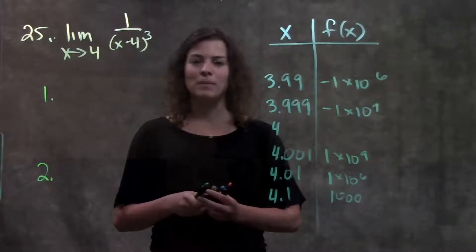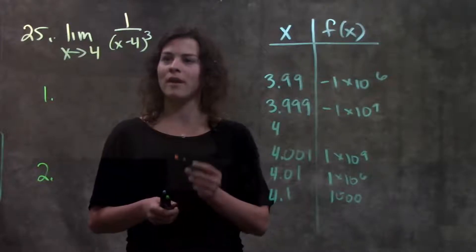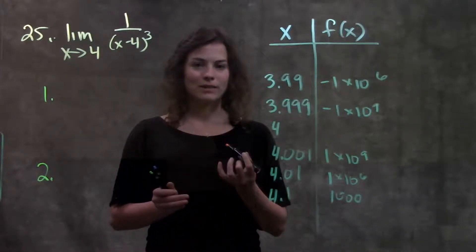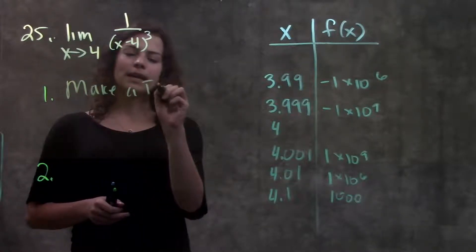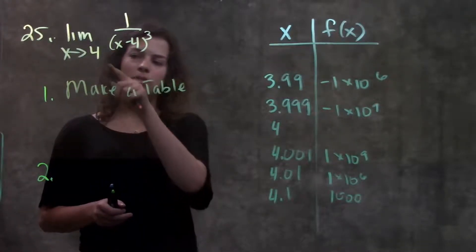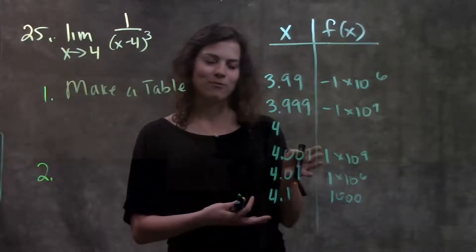So let's go ahead and go through this example problem. This is number 25 in your book. It's asking for the limit as x approaches 4 for this function here. So like we just said, our first step we're going to make a table and plug in x values getting closer and closer to our point of interest from either side.